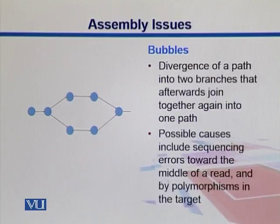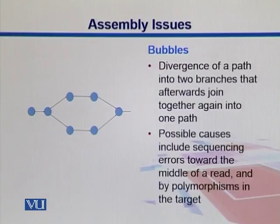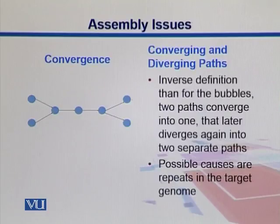Bubbles are formed if we have a divergence of the path and then afterwards there is convergence — that kind of arrangement is called bubbles. Again, it's related with the sequencing errors which are there in the middle of the read, and there might be polymorphisms in the target. So that can be a reason, and these bubbles are observed in the assembly.